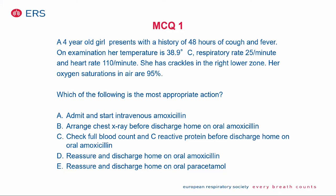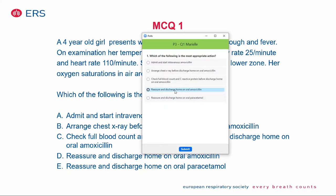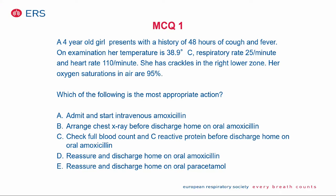I would like to introduce a case: a four-year-old girl who presents with cough and fever. She has a temperature of 38.9, slightly increased respiratory rate and heart rate, crackles in the right lower zone, and an oxygen saturation of 95%. What would be your following action? Would you admit the child and start IV amoxicillin? Would you order a chest X-ray but send the child home on oral amoxicillin? Would you do blood tests before discharge? Or would you just discharge her home on amoxicillin or oral paracetamol? I will give you a few seconds to make your choice.